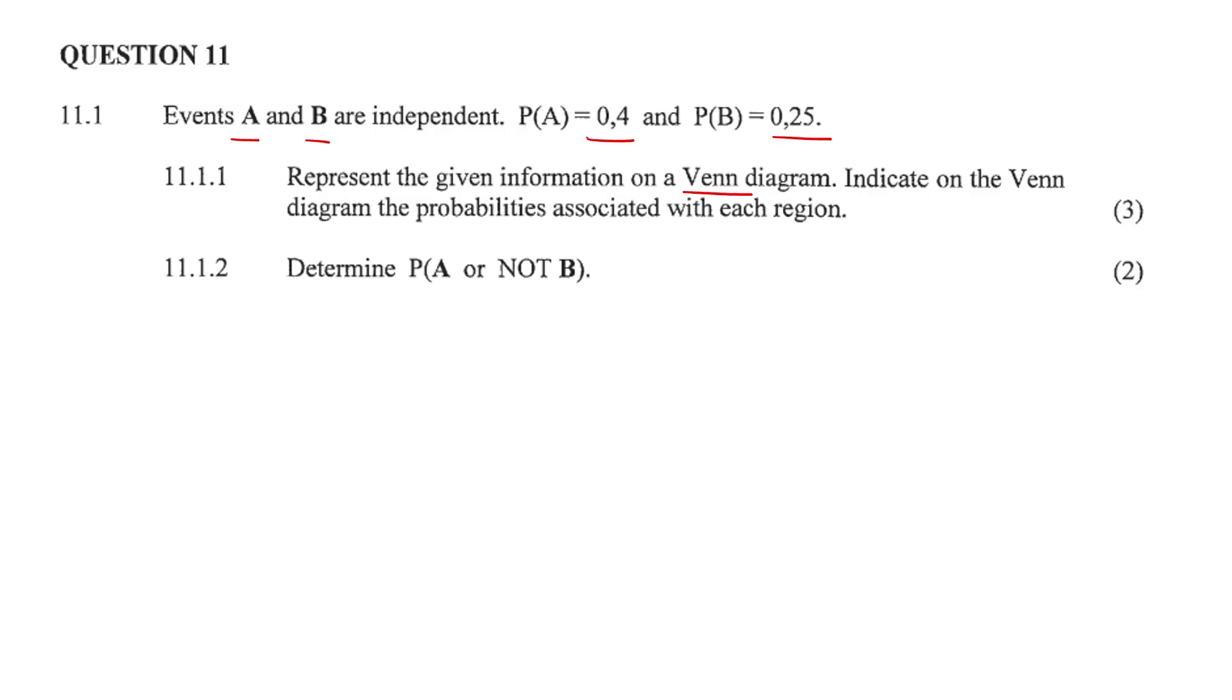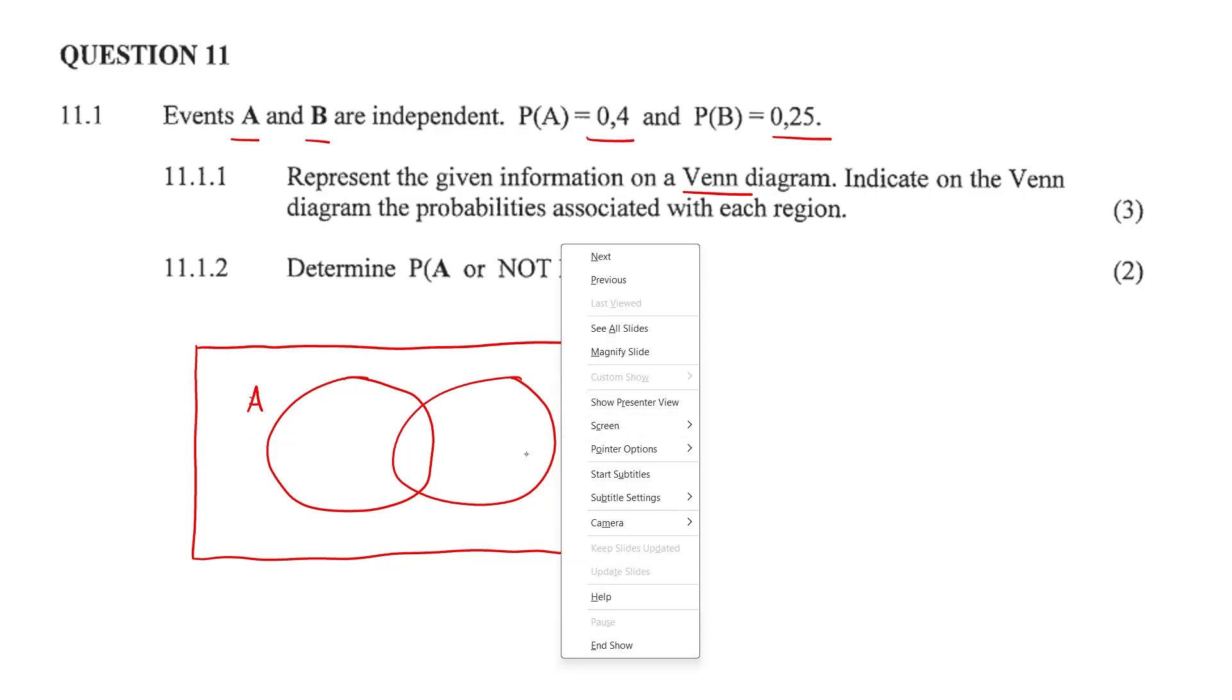So let's draw up this Venn diagram. Just two circles here because we only have two events, A and B. Don't forget to draw this rectangle. You must draw it. It's part of the format of a Venn diagram. That's event A and that's event B.